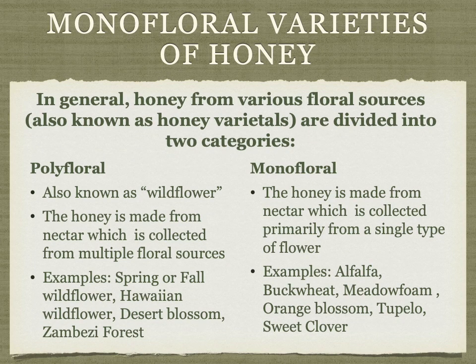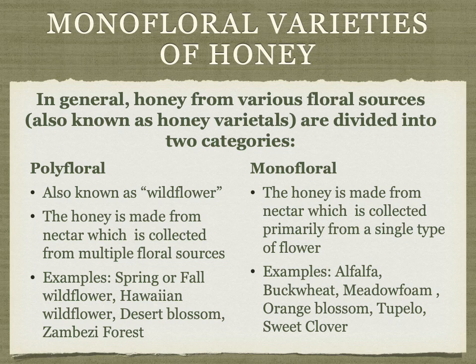Before beginning, let's talk about the different types of honey. In general there are two types: polyfloral, also known as wildflower, and monofloral, sometimes called unifloral honey. Polyfloral honey is made from nectar collected from multiple floral sources — examples include spring or fall wildflower and desert blossom. Monofloral honey is made from nectar collected primarily from a single type of flower, such as alfalfa, buckwheat, orange blossom, and so on.